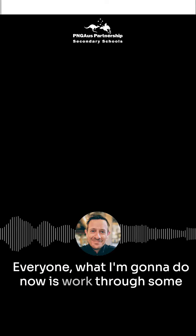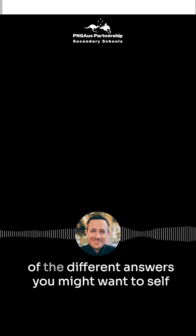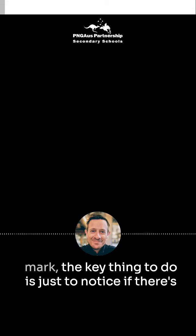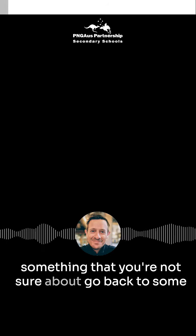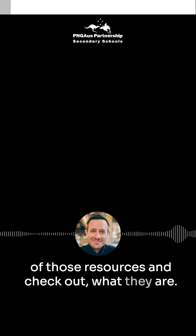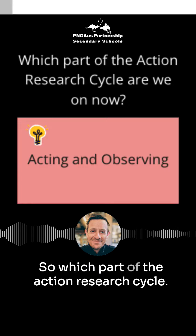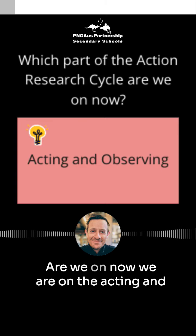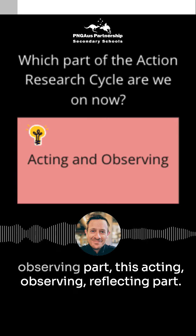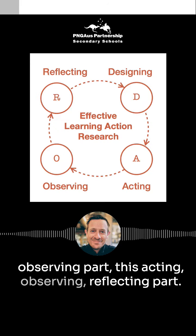Okay everyone, what I'm going to do now is just work through some of the different answers you might want to self-mark. The key thing to do is just to notice if there's something that you're not sure about, or go back to some of those resources and check. So which part of the action research cycle are we on now? We are on the acting and observing part.